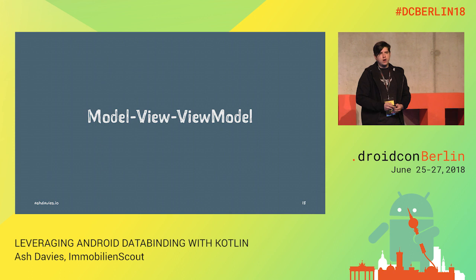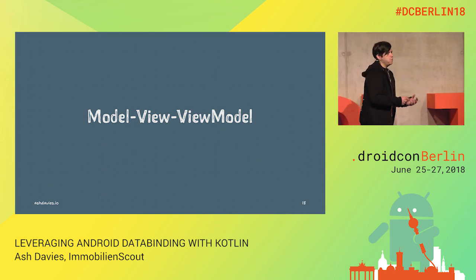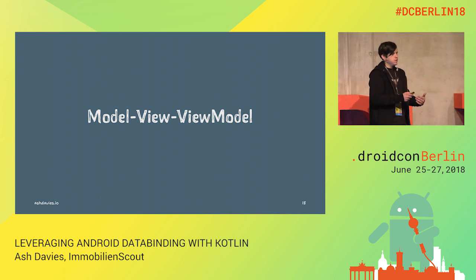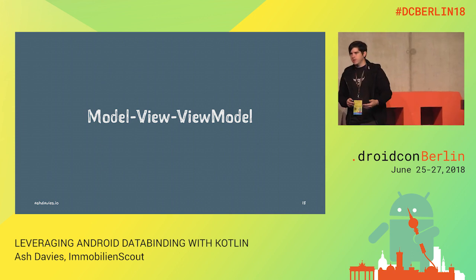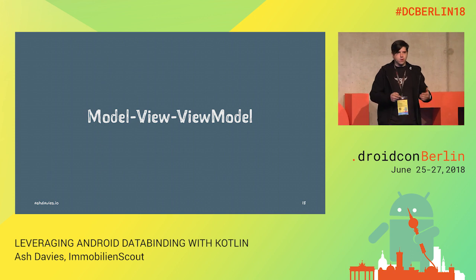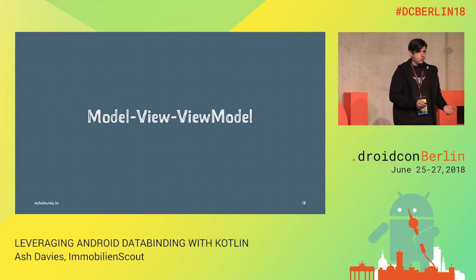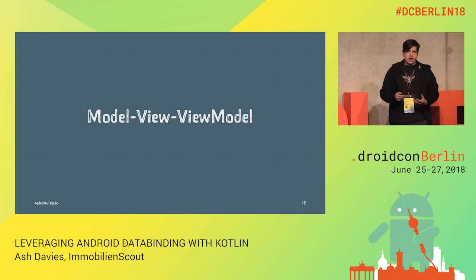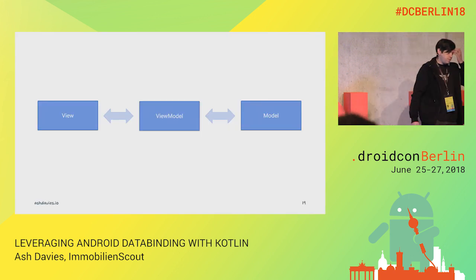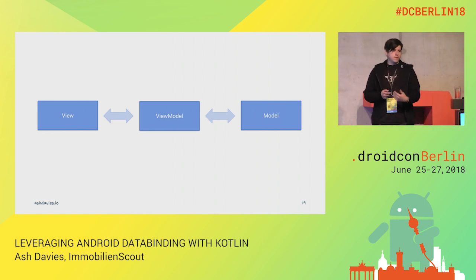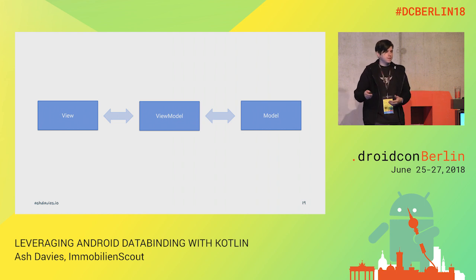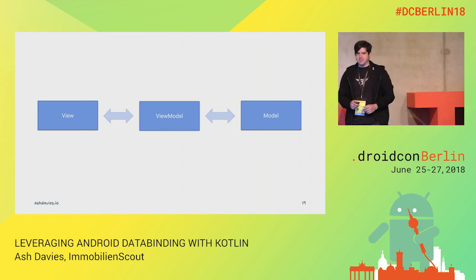Data binding works really well with MVVM, because the view passively observes the view model and it doesn't really matter if the view is there or not. We don't have to worry about unregistering a listener or making sure our view is nullable, because we can have many or no listeners on our view model properties. The lifecycle-aware components react accordingly, and the view model notifies the view of UI events for user interactions.